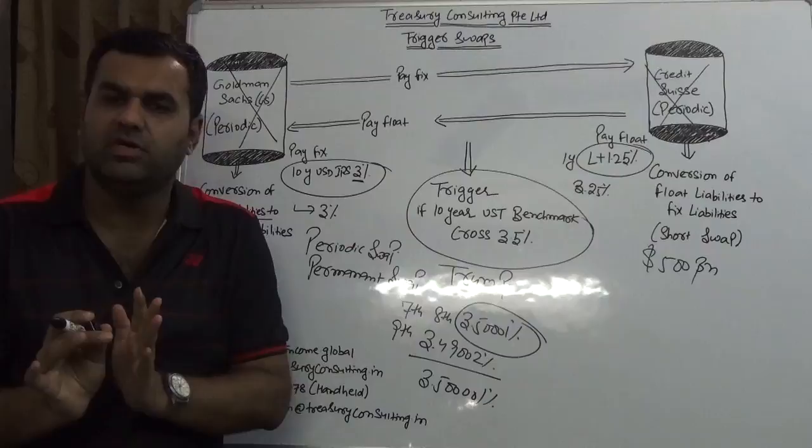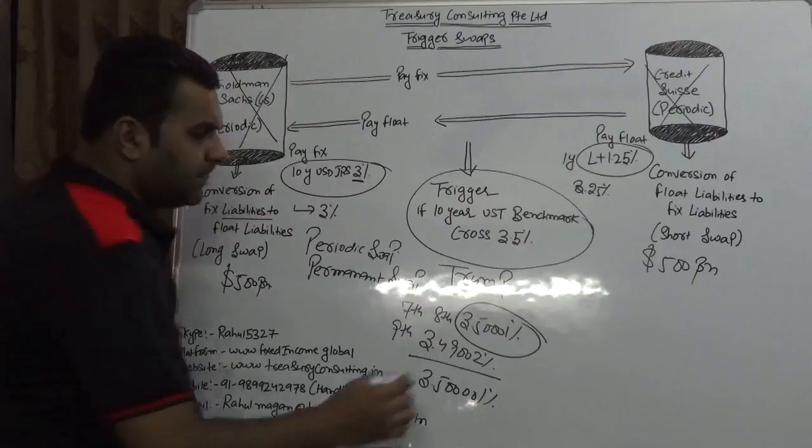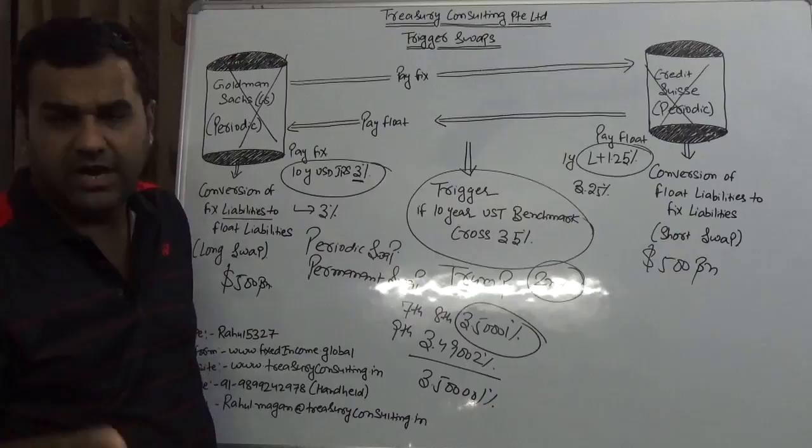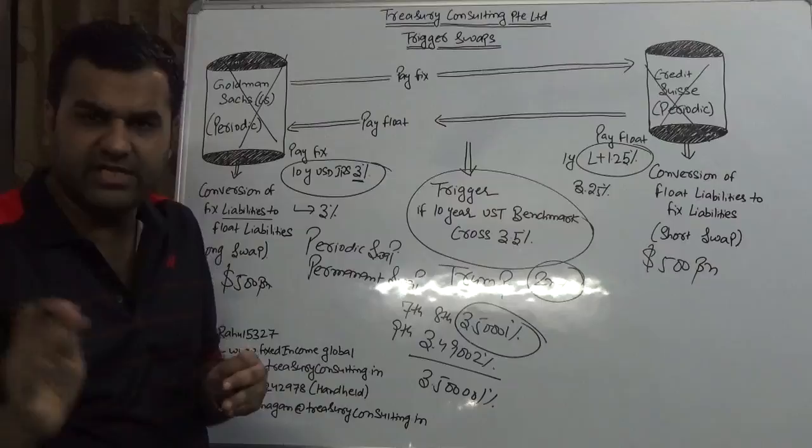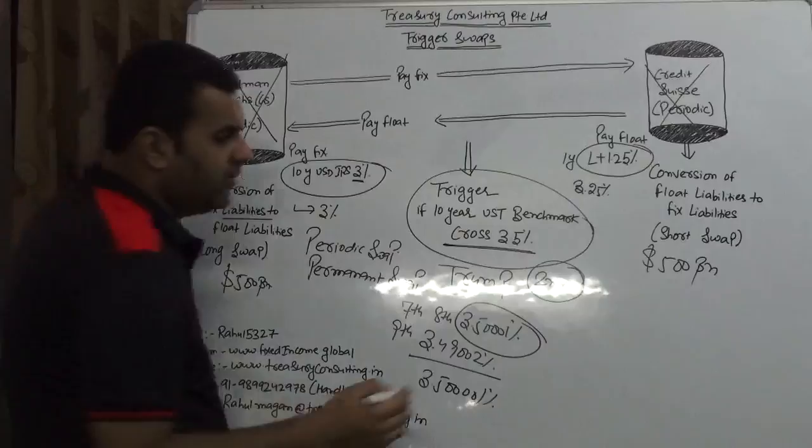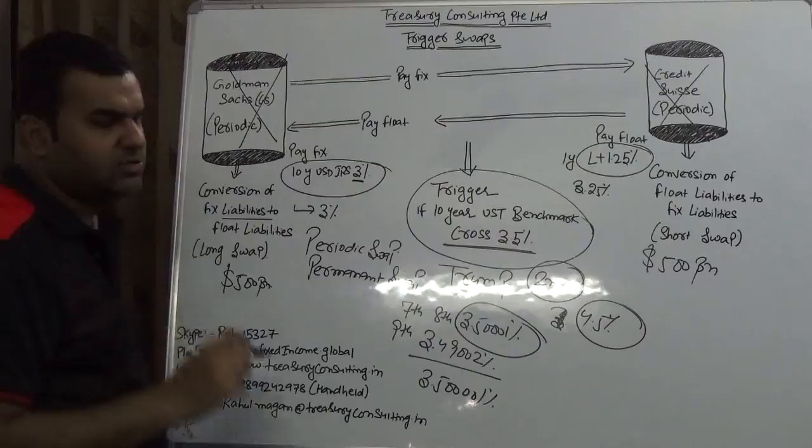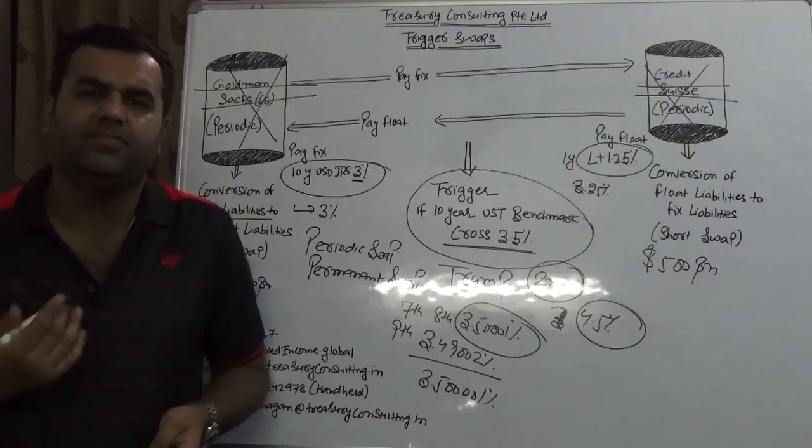Now in case of permanent trigger swap, any quarter - say on 2nd quarter, forget the 8th quarter - on the 2nd quarter, dollar went hawkish. Mr. Trump gave a statement that 'I told you I would hike 4 times, I'm taking my statement back, I would hike 6 times. After every 2 months I'm going to hike the federal fund rate.' Market went hawkish, dollar got strength, and this 10-year benchmark USD went to 4.5%, which is much above the trigger. In case of permanent trigger swap, please note my words, the deal would wind up. There is no deal. That is the difference between permanent trigger swap and periodic trigger swap.